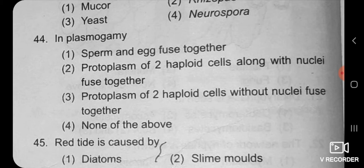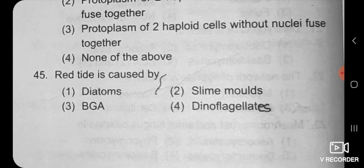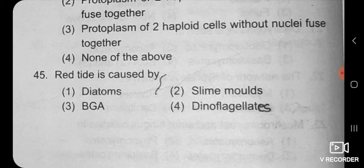The last MCQ: red tides are caused by? In kingdom protista, we have seen that dinoflagellates are one group of protista, whose example is Gonyaulax, which is red in color and causes red tides. So the correct answer is dinoflagellates. Overall, about 45 MCQs have been discussed from the topic biological classification.